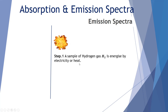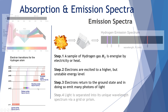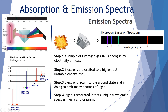To generate an emission spectrum, step one is to get a sample of hydrogen and energize it by electricity or heat to get a hot gas sample. Electrons are excited to a higher but unstable energy level, then return to the ground state, emitting many photons of light. The light is separated into its unique wavelength spectrum via a grid or prism. These are the four wavelengths in the visible spectrum — there are more in the infrared and ultraviolet. The emission lines appear at 410, 434, 486, and 656 nanometers across the 400–700 nm visible spectrum.